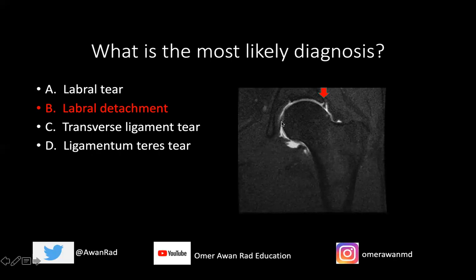The ligament of teres is this structure right here — it goes into the fovea capitis and is a dark linear structure connecting with the transverse ligament. The transverse ligament bridges the anterior and posterior rim of the acetabulum, and that is also not torn here. So this is a nice example of what a labral detachment looks like on an MRI arthrogram.